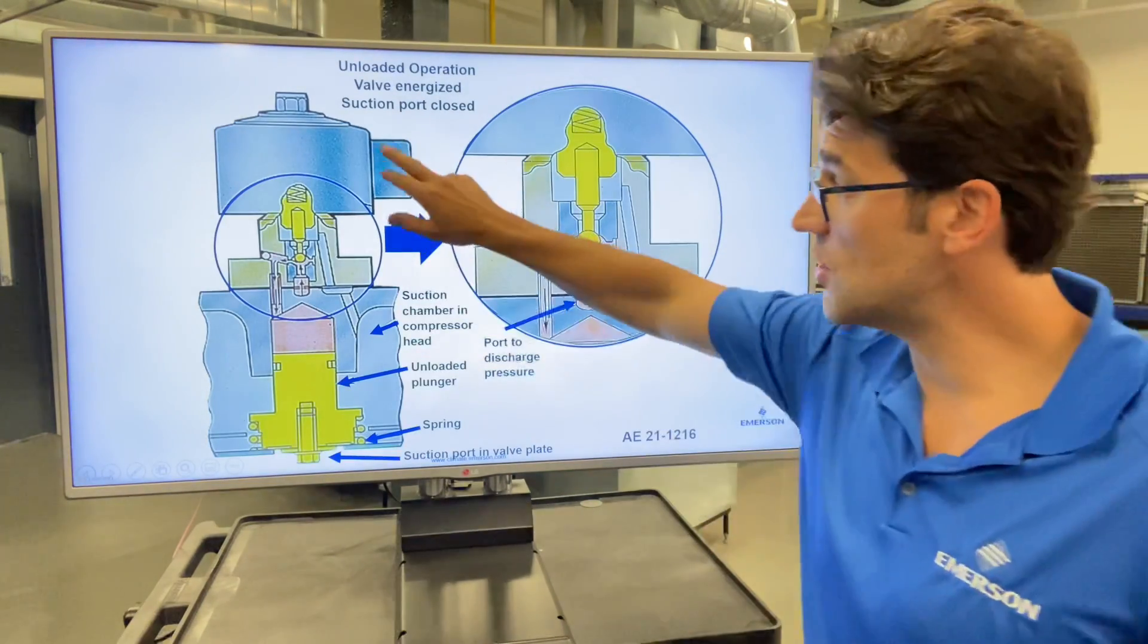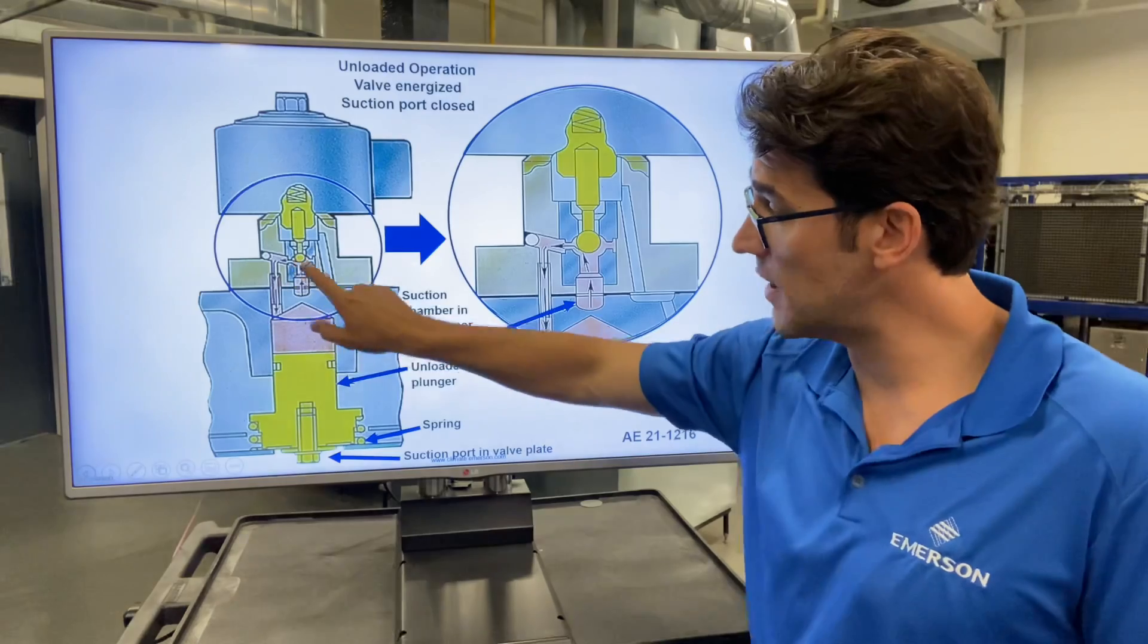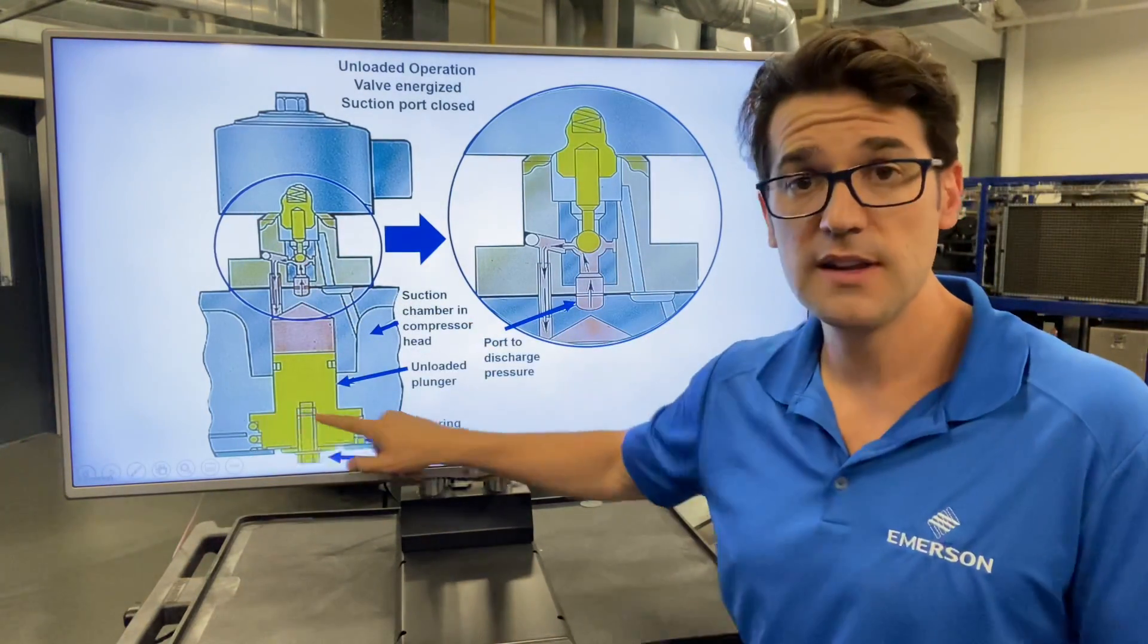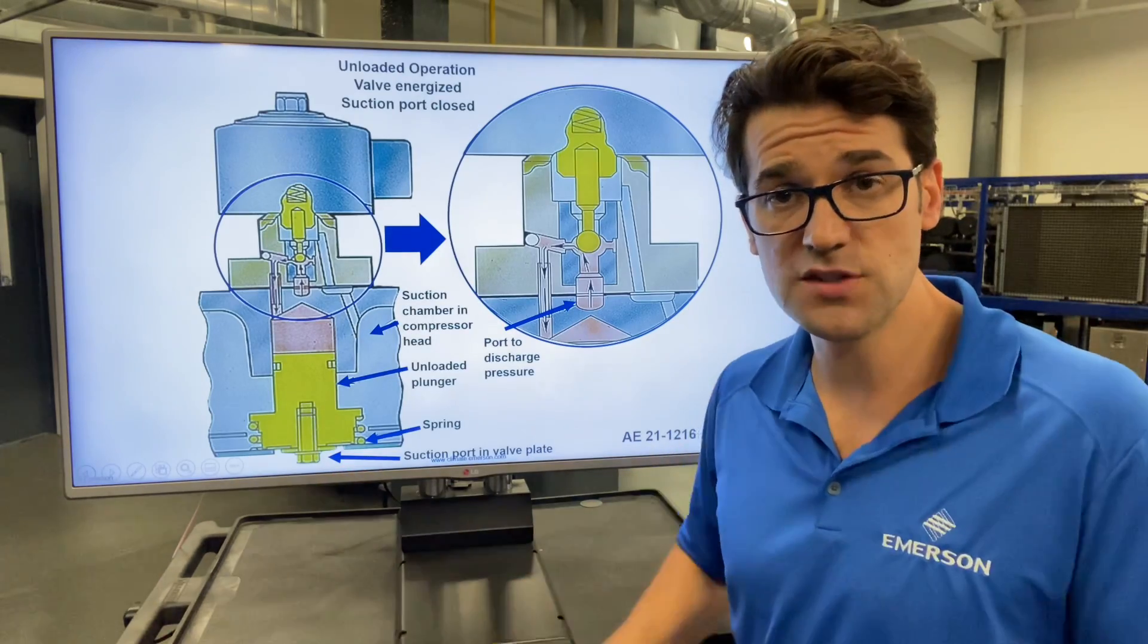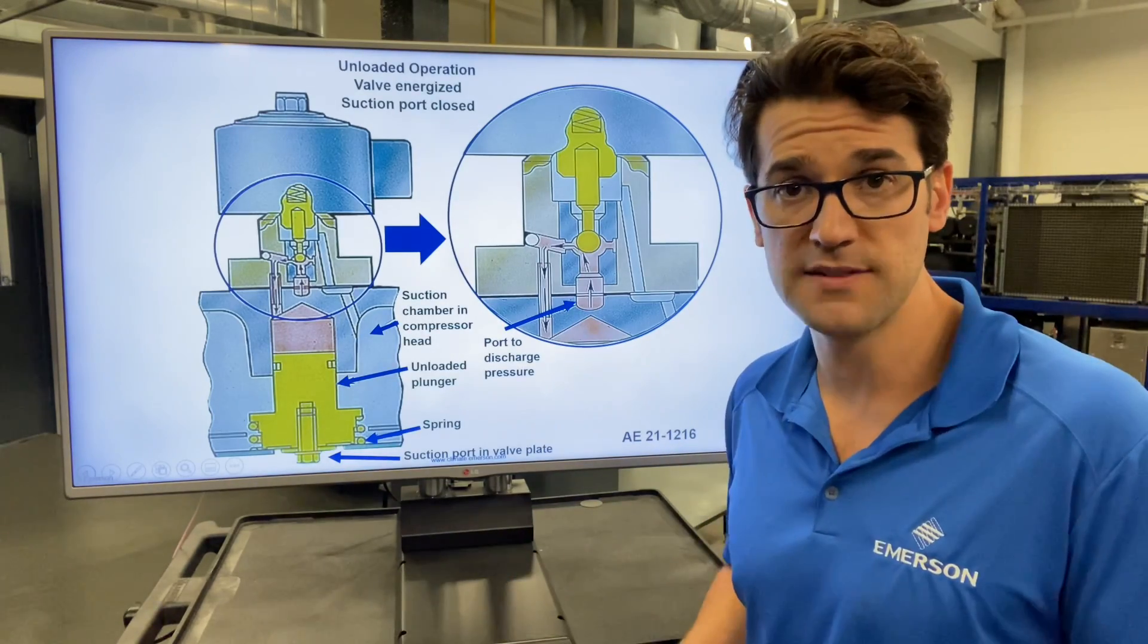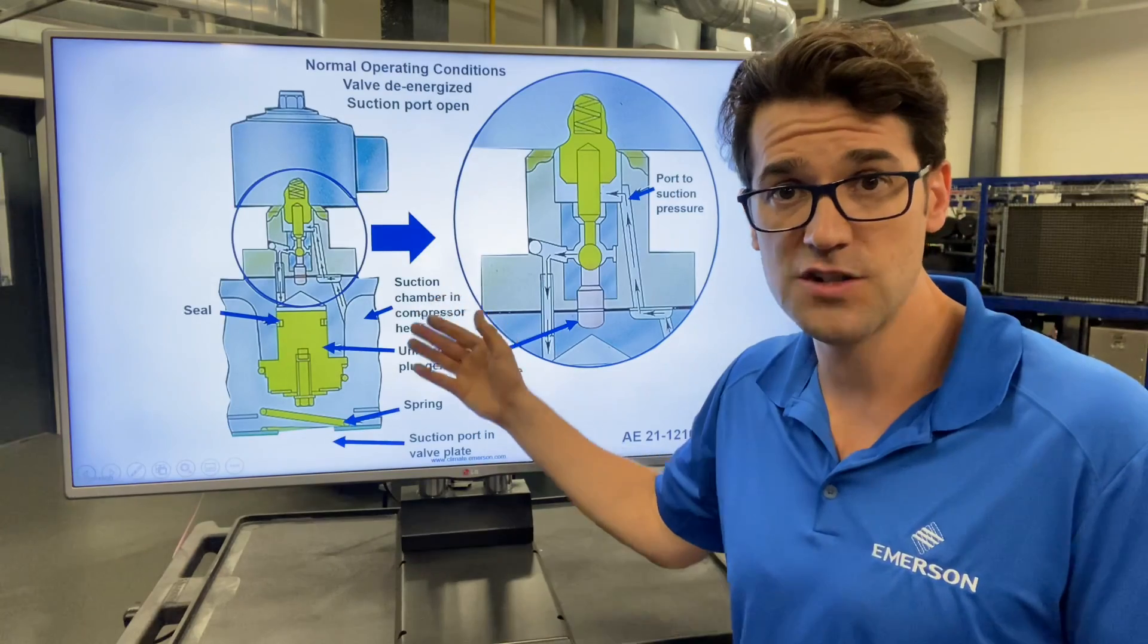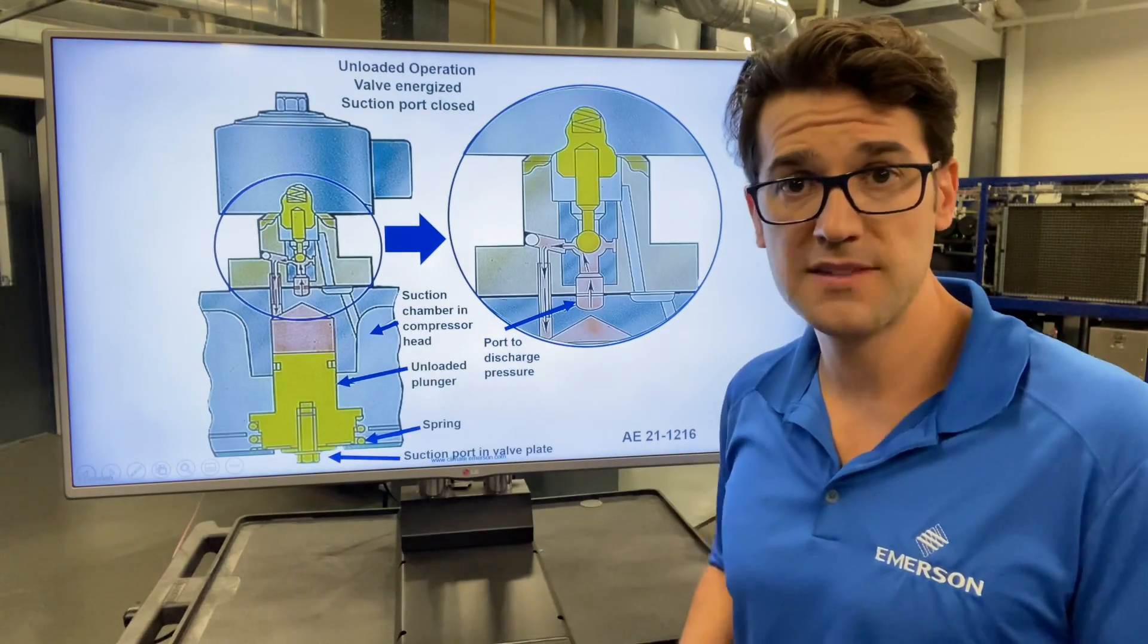But when this solenoid energizes, it opens up this discharge port and puts pressure down on this plunger and closes it. Closes the suction so there's no compression. Now you're at 50% capacity. 100% capacity de-energized, 50% capacity when energized.